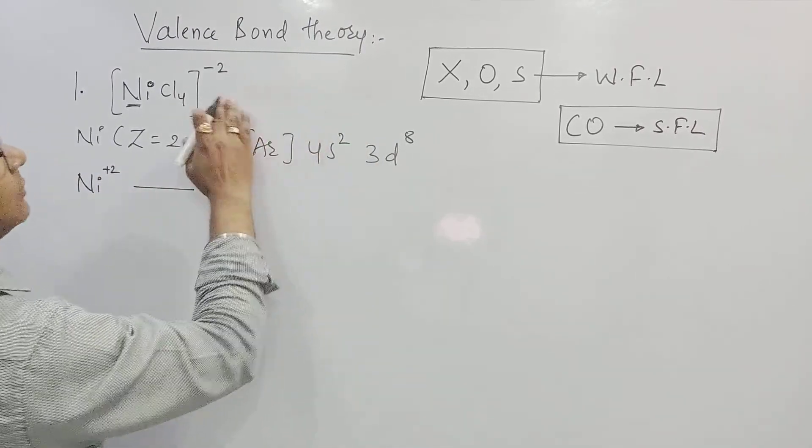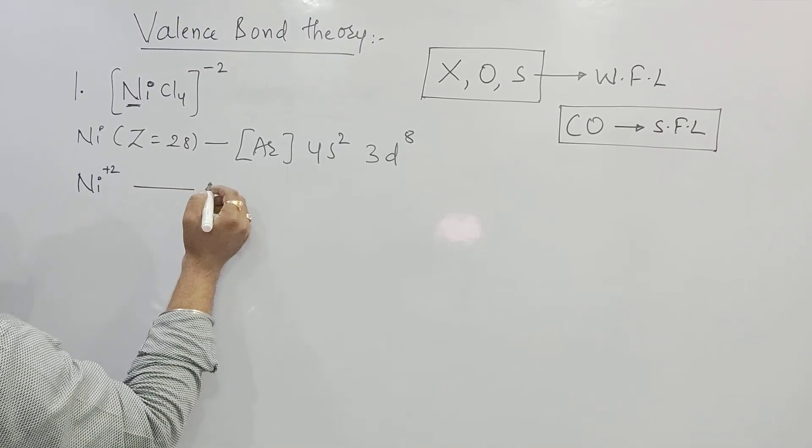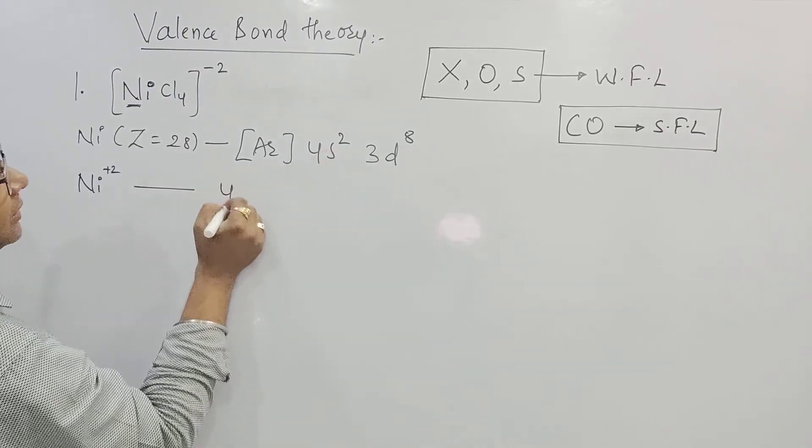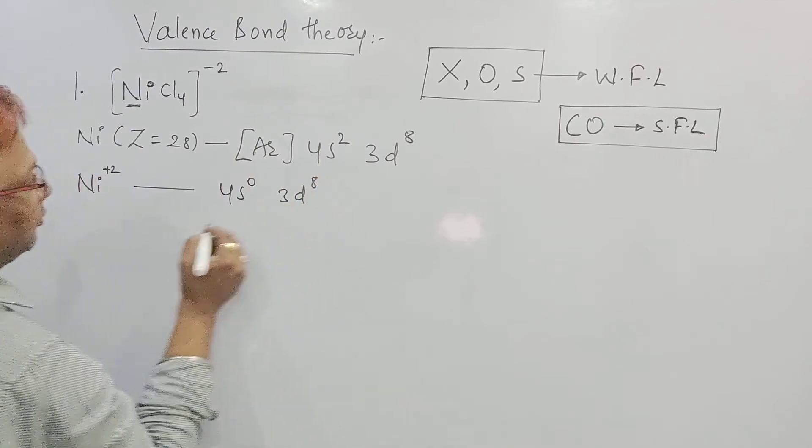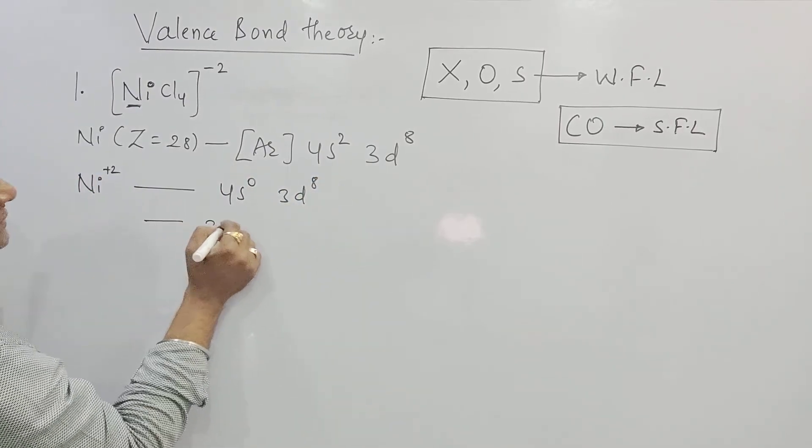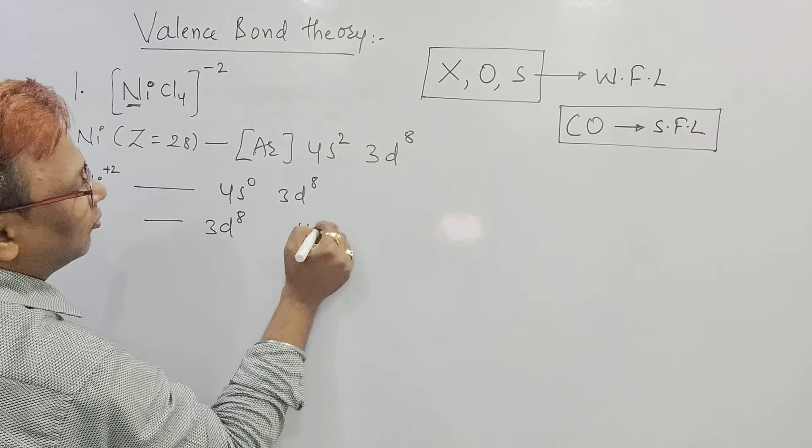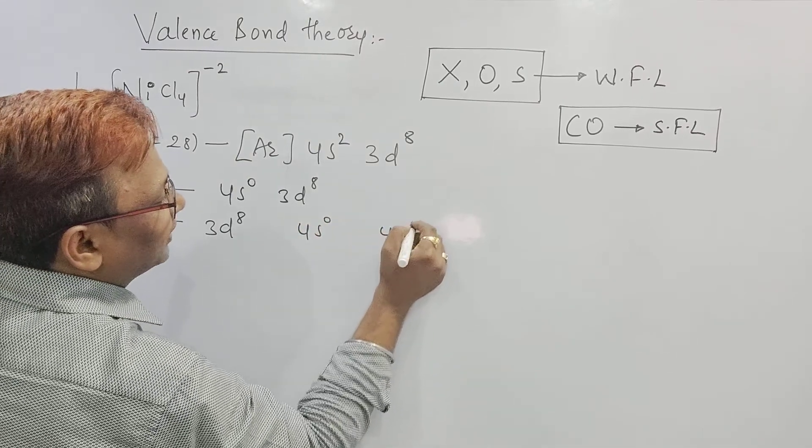As it has the valency plus 2, we can say it loses 2 electrons from the valence shell. So 4s0 and 3d8. We can write in increasing order 3d8, 4s0, 4p0.